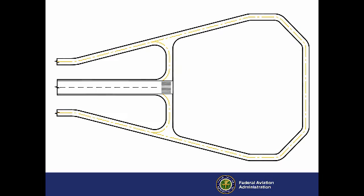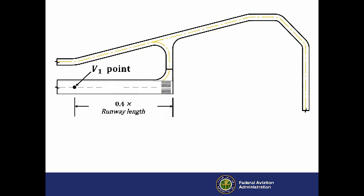To calculate the required width of the screen, start by defining the half-width of the screen. To do this, establish the V1 point, or the point at which the airplane reaches V1 speed. For EAT design purposes, the V1 point is assumed to be located at 40% of the runway length, or DV, from the stop end of the runway.